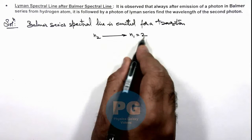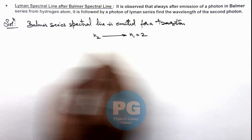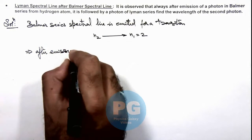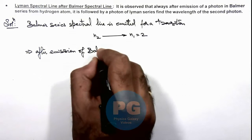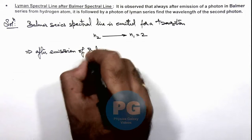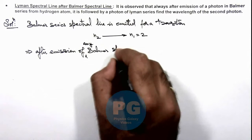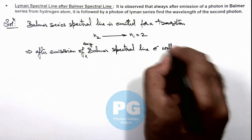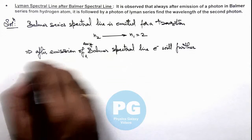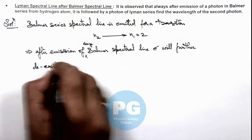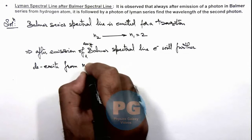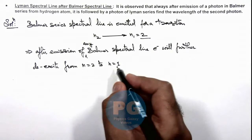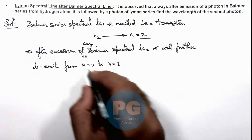Certainly, when an electron drops to n equal to 2, this implies that after emission of any Balmer spectral line, the electron will further de-excite from n equal to 2. This means the next photon emitted corresponds to a transition from n equal to 2 to n equal to 1, because the electron is already at n equal to 2 and n equal to 1 is vacant in hydrogen, so it will further de-excite from 2 to 1.